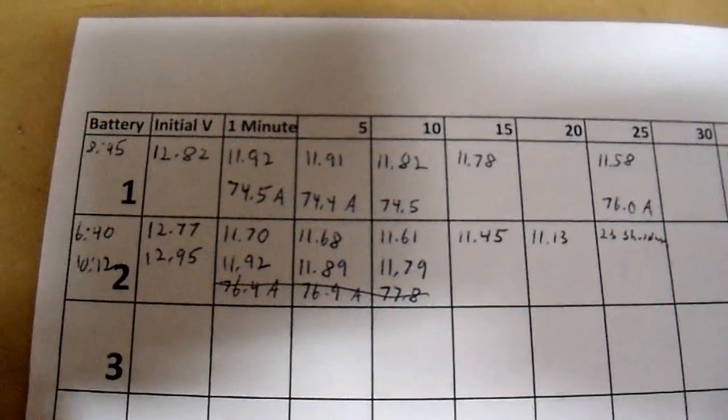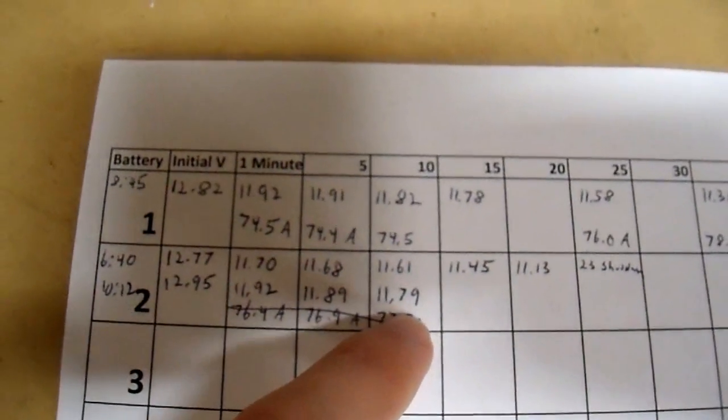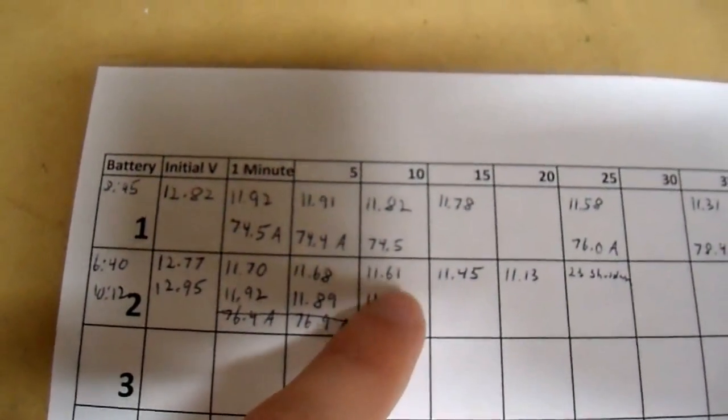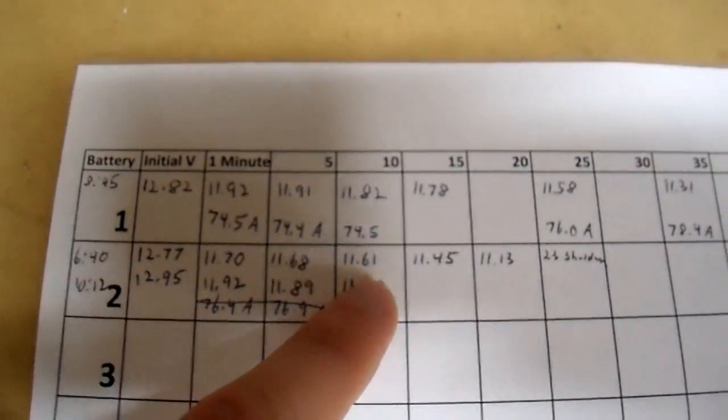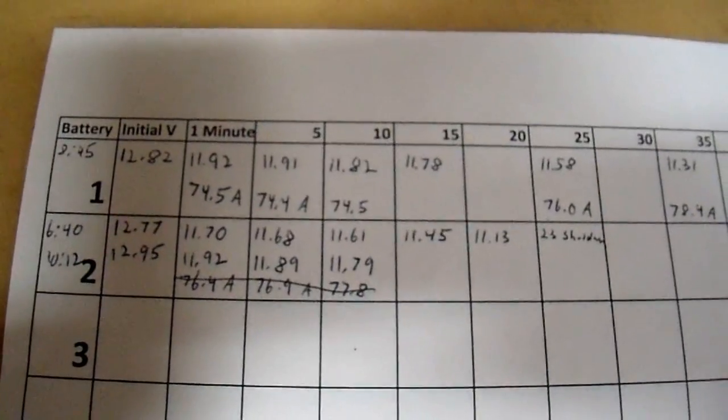It's been five more minutes, and after 10 minutes the voltage is 11.79 volts. Last time was 11.61, so once again the battery is doing very well. I can let this run for a while longer and we'll see how it does.